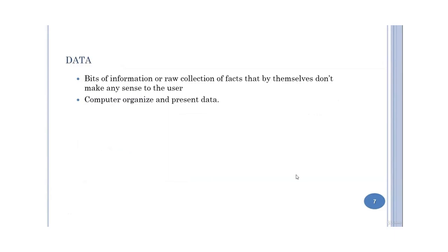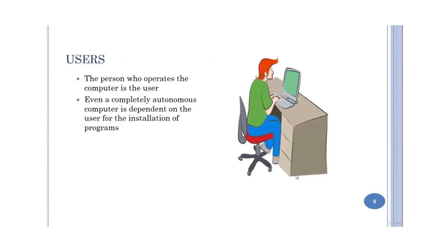The next part of a computer system is data. Data is the raw collection of facts that by themselves do not make any sense to the user. The computer's primary job is to organize data and bring it into a presentable form.